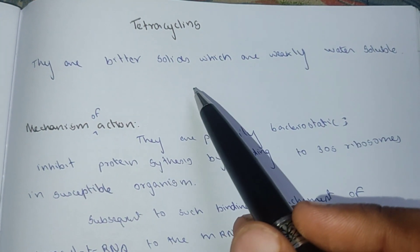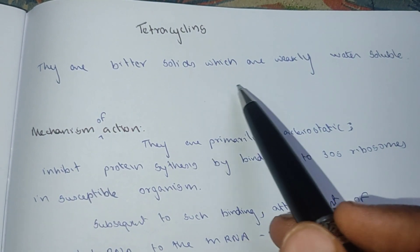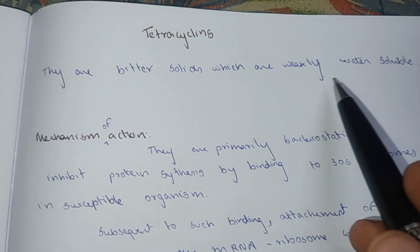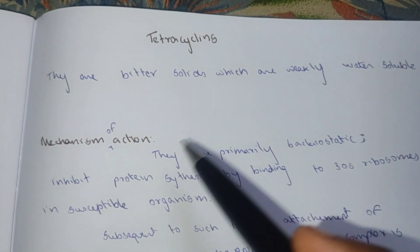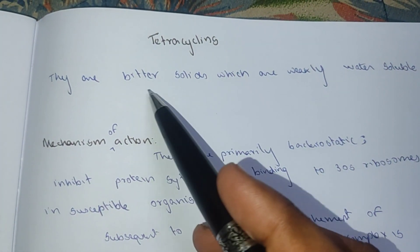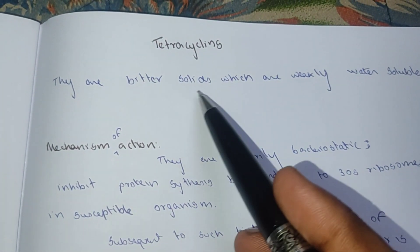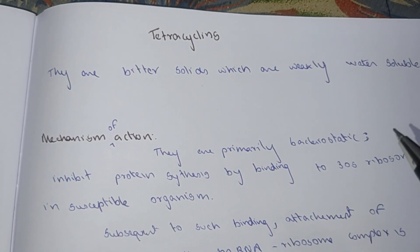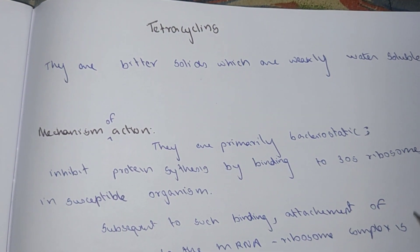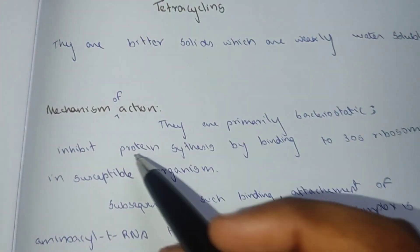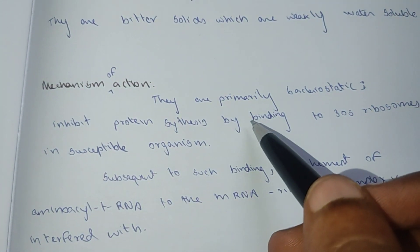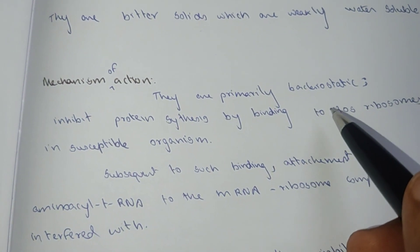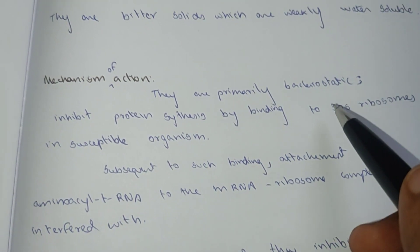Tetracycline is a bitter solid which is weakly water soluble. Mechanism of action: it is primarily bacteriostatic.